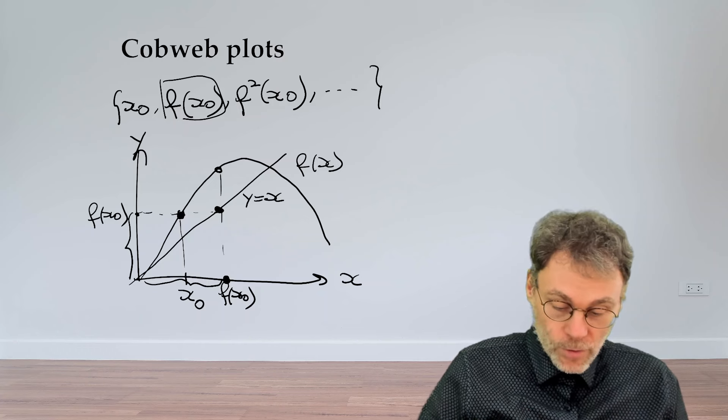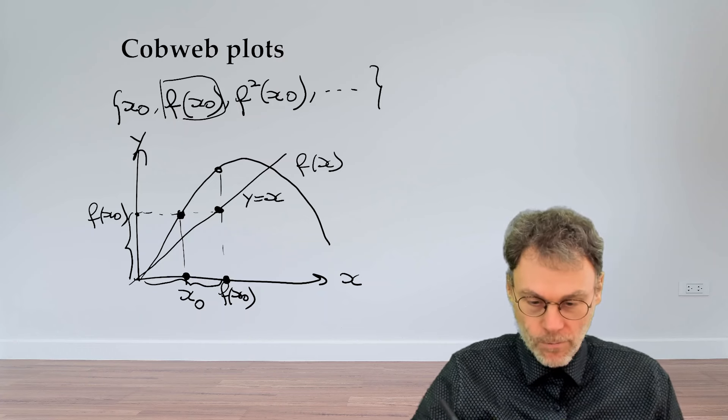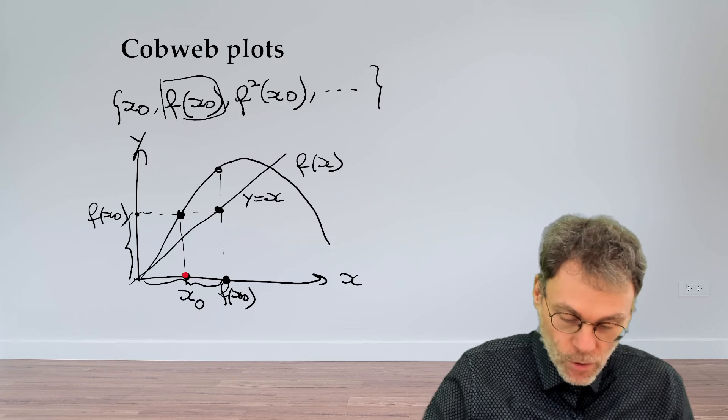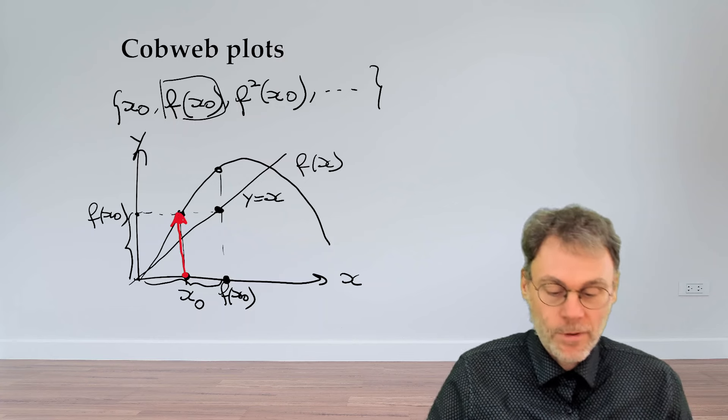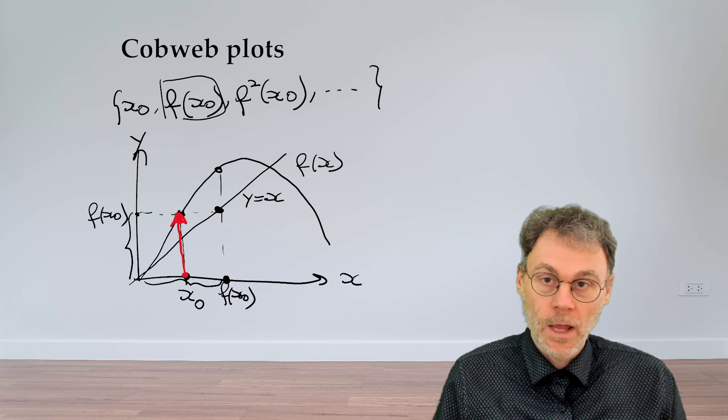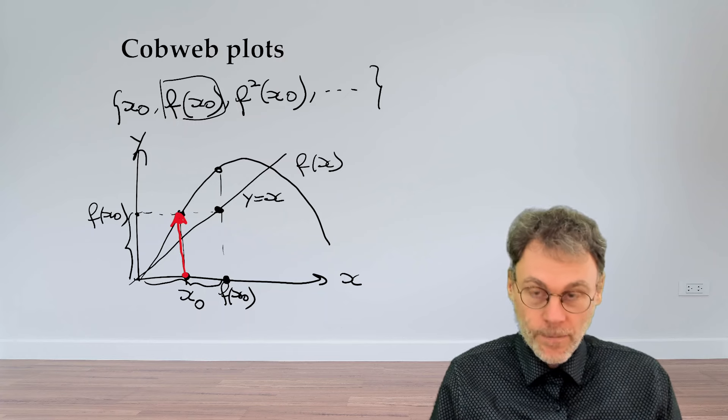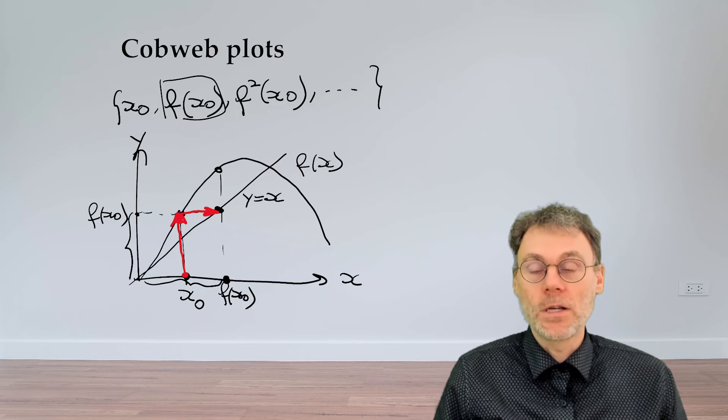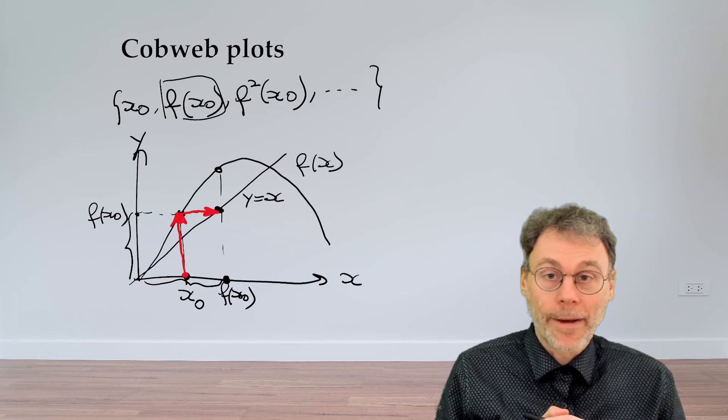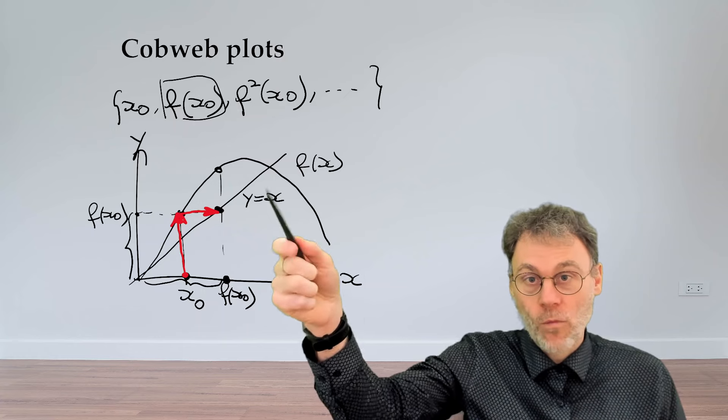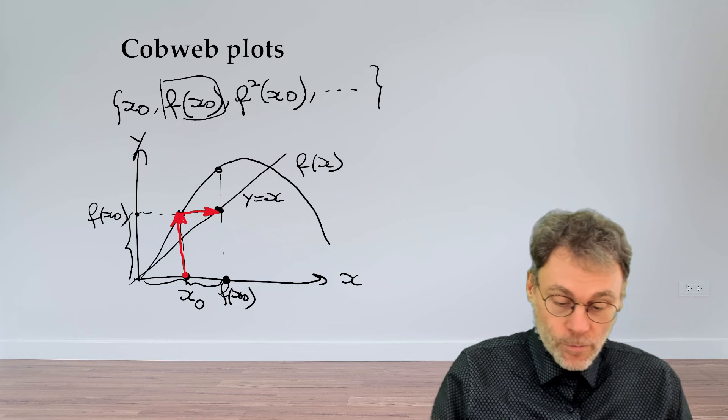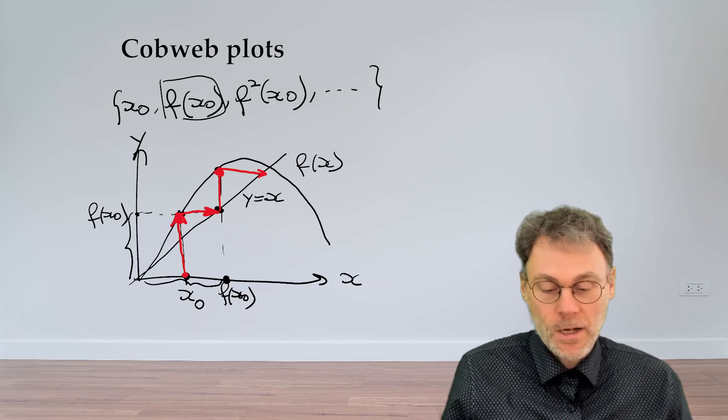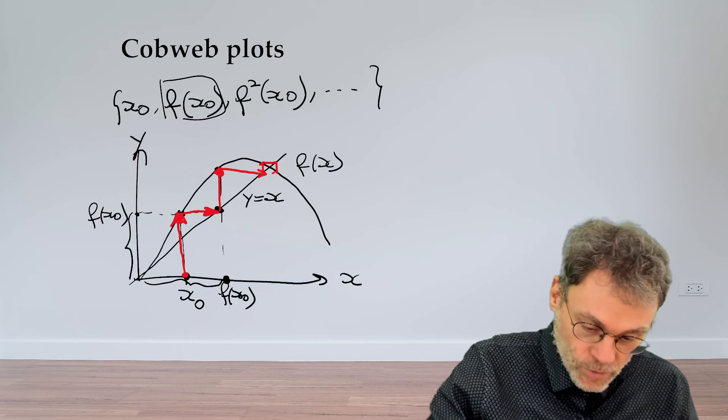So if we recap, what we can do is we start from our initial condition x0, and then let's bring in some color here to brighten up our day. So let's start from x0. First thing we do is we go up until we hit the graph of the map that we're interested in, the graph f of x here. So this gives you the first point of our orbit. And then we go horizontally until we hit this straight line at an angle of 45 degrees, which will turn our output value back into an input value by virtue of the fact that you have y equal to x here on this line. And then you repeat this procedure. You go up until you hit the graph, then you go vertically until you hit the line, and then keep on repeating that.